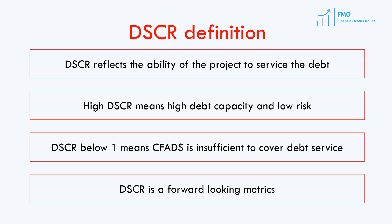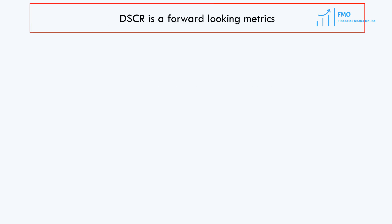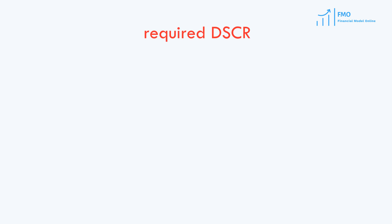Typically, loan agreements specify in Financial Covenants the minimum required DSCR, along with other ratios that the project shall meet.